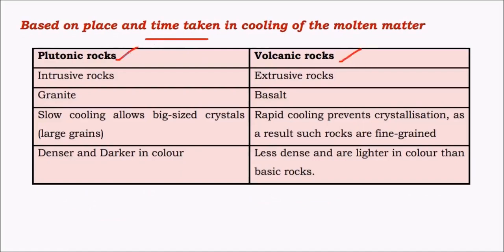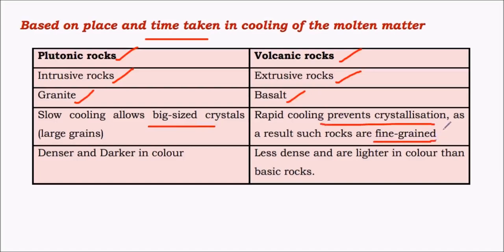Based on place and time taken in cooling, igneous rocks are divided into plutonic rocks and volcanic rocks. Plutonic rocks are intrusive rocks formed due to the slow cooling of magma deep below the earth's crust, giving rise to very large crystals — granite is a good example. Volcanic rocks are extrusive rocks where lava flows out and cools above the earth's surface, giving rise to small crystals — basalt, the major constituent of Deccan Traps, is an example.